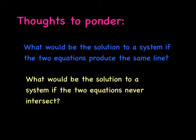Now make sure that you have paused, that you have taken good notes, that you have your summary. Here are some further thoughts to ponder that we will further discuss in class. What would be the solution to a system if the two equations produce the same line? And what would be the solution to a system if the two equations never intersect? Just some things to think about.